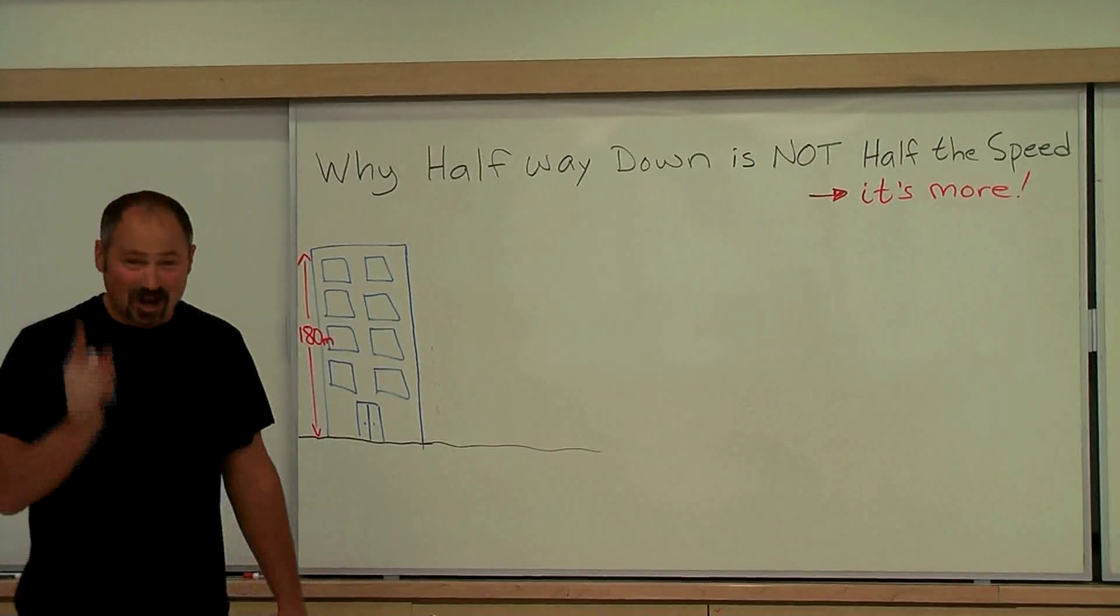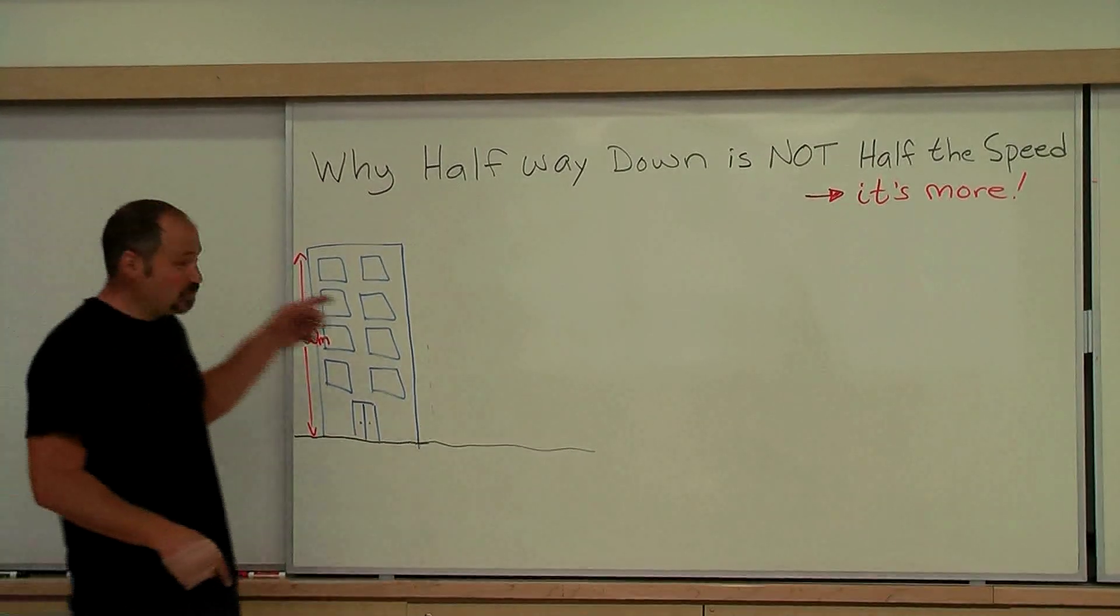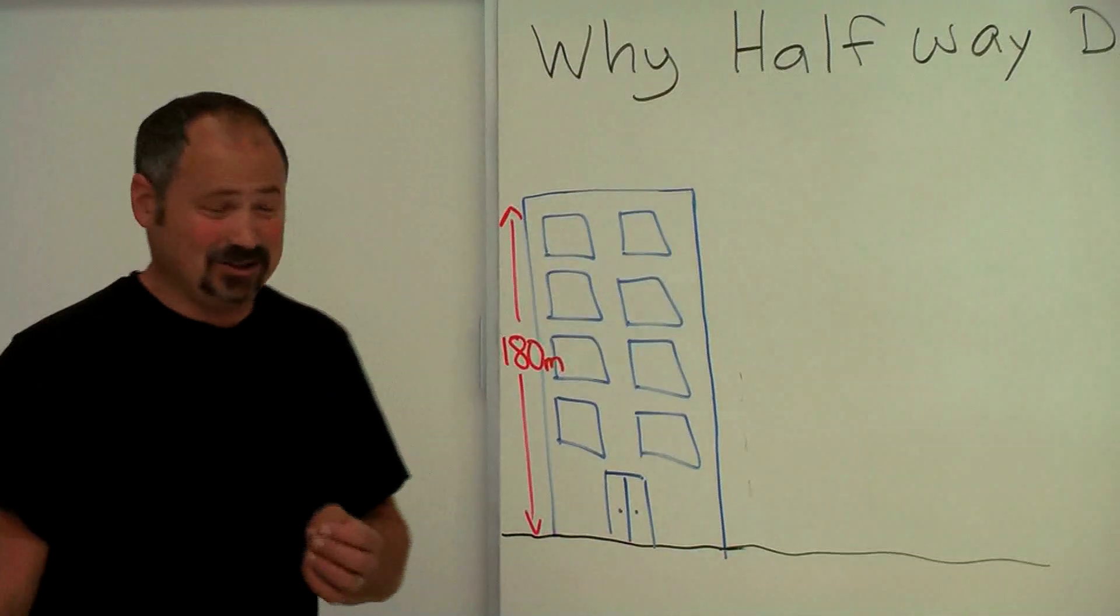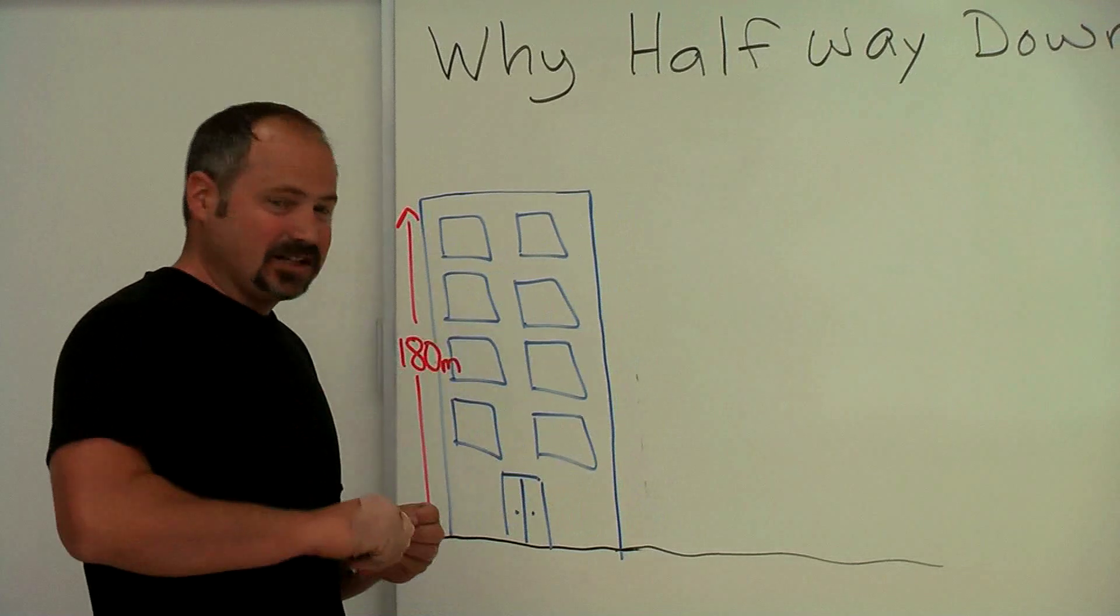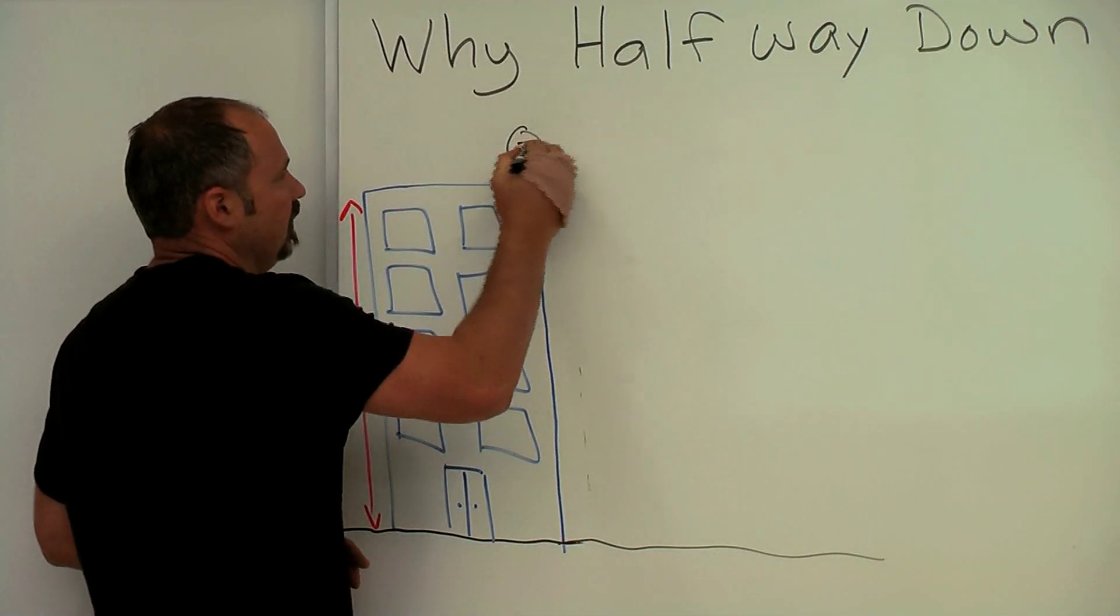Halfway down is not half the speed. In fact, you'll see that the speed is larger halfway down, larger than half. Let's take an example. Let's put a person at the top of this building and this person is going to drop a ball.